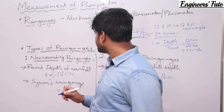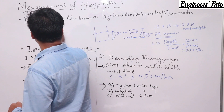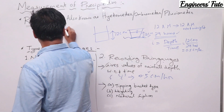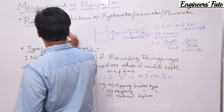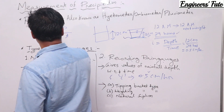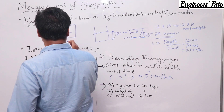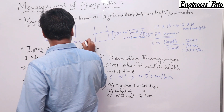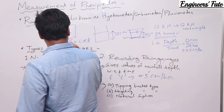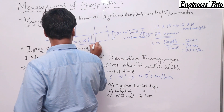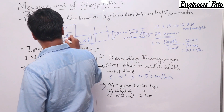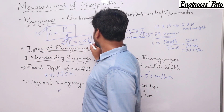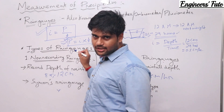The most important point: intensity is known as depth divided by time, where depth is P and time is T. So intensity I equals P divided by T. This implies that precipitation P equals intensity I multiplied by time T. You have to remember these two formulas — they will appear in the problem-solving part of this chapter.